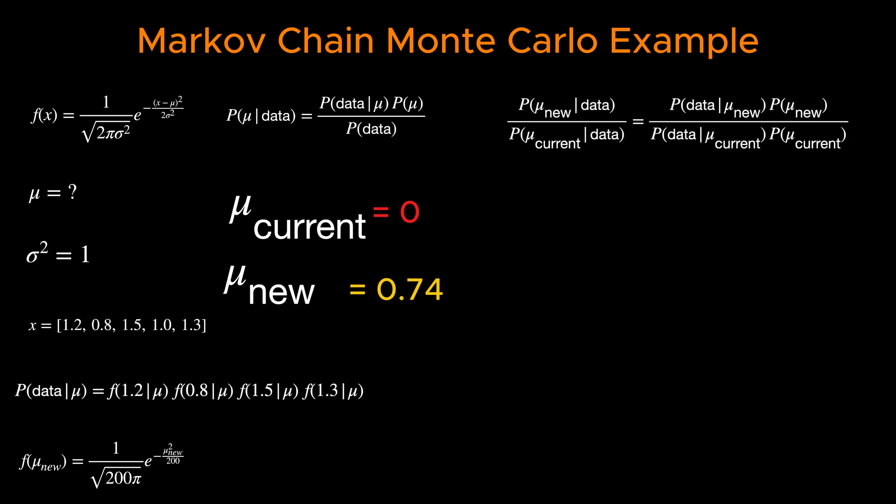Let's now compute the ratios of probabilities of the new and the current μ given the data set. We substitute the equivalent terms using the Bayes theorem and call it the acceptance ratio. And here is its value.